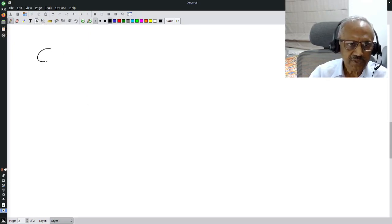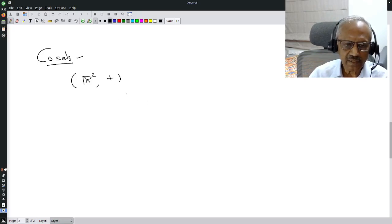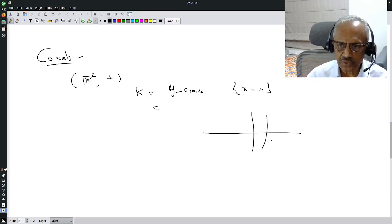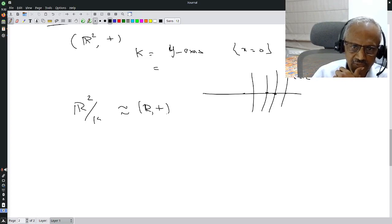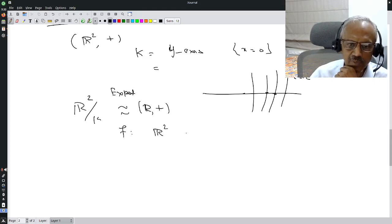Let us look at one or two examples. Start with R² under standard addition. Then let us look at my group K which is the y-axis, that is x equal to 0. Then we have seen that the quotients are lines parameterized by this point, x equal to constant. So I would think R² mod K should be isomorphic to R under addition.